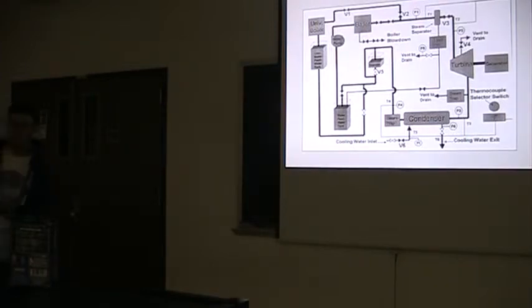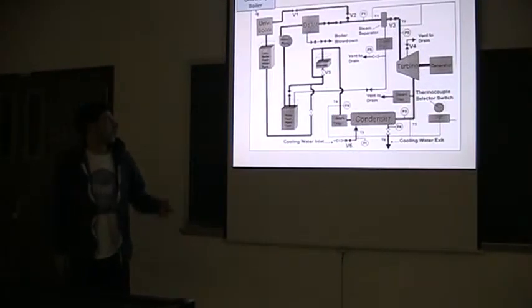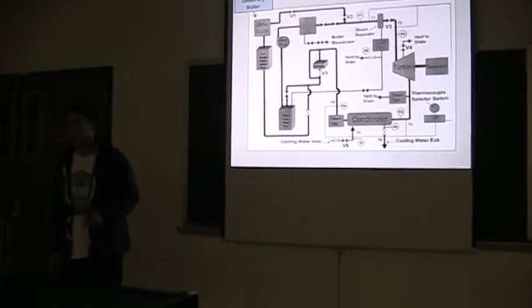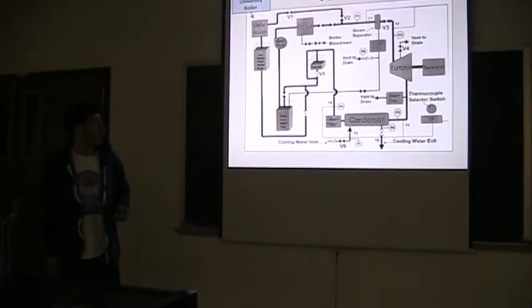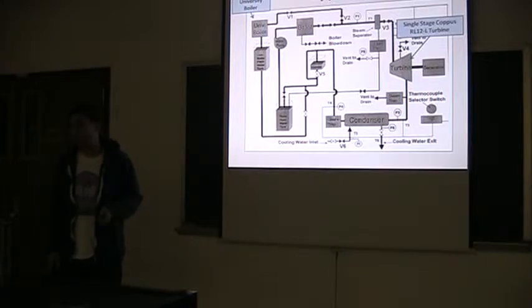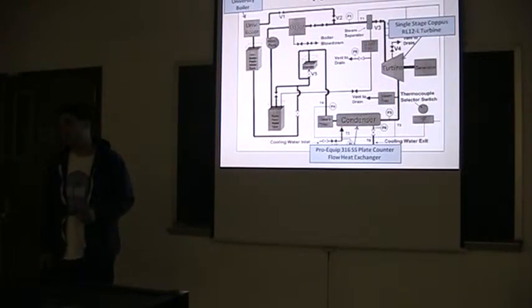These are some of the main components. The first main component is the university steam line. This provides steam from LSU's power plant. We have a single-stage impulse turbine, which we'll be using to produce work from the steam. And we have a 316 stainless steel plate counterflow heat exchanger, which will be used for cooling the working fluid.